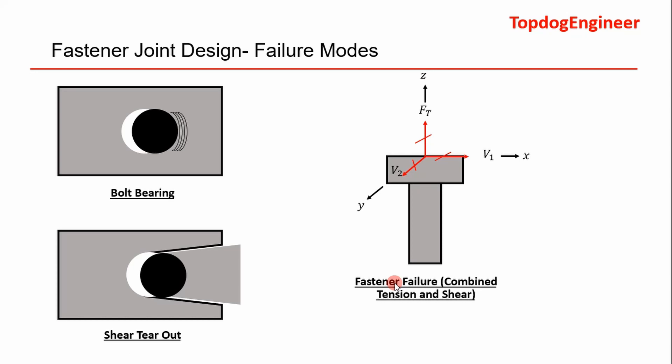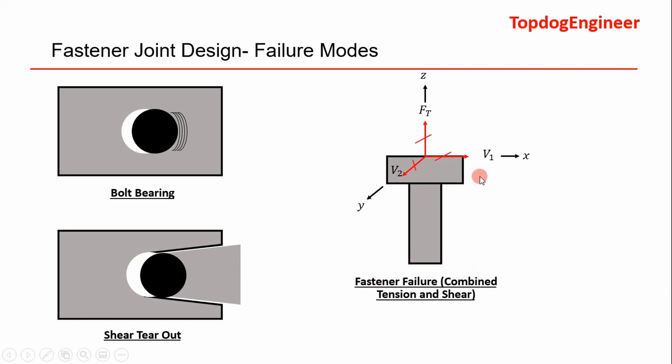When you consider fastener failure, we often consider just combined tension and shear acting on the fastener. The reason we do this is because in joint design, the torques and moments that act on your joint can be easily converted to shear and tension components. It's easy to do by hand and you can get a reliable result. Also, your FEA program will output axial loads on your fastener and shear components in the x and y directions, which you can pull out and put into a spreadsheet to do your analysis.